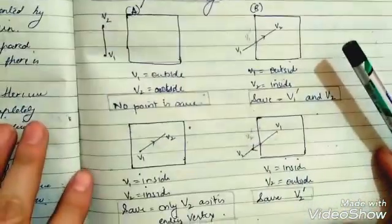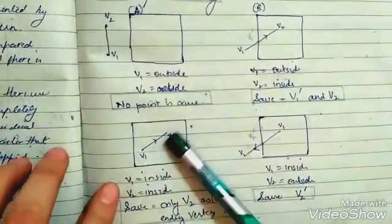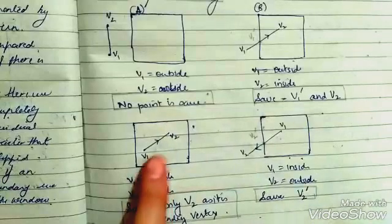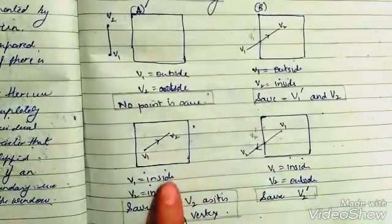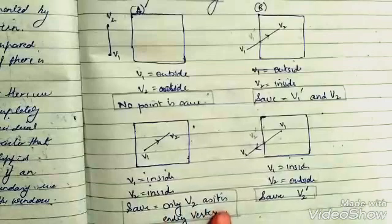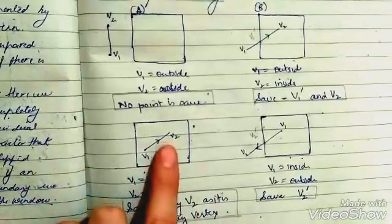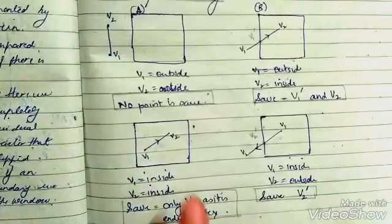In a similar way, V1 and V2 both are inside, both of the vertices are inside the window. Therefore, only V2, the ending vertex, will be saved.